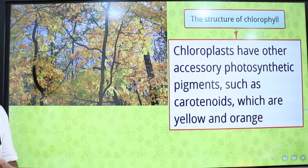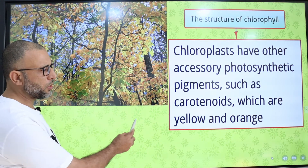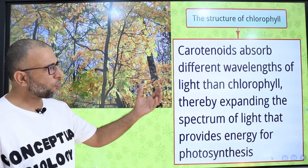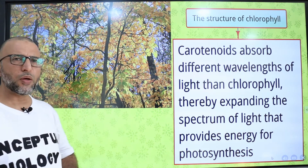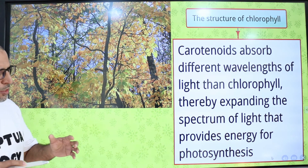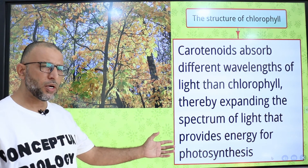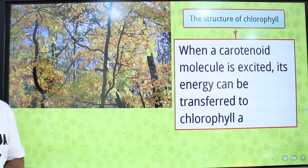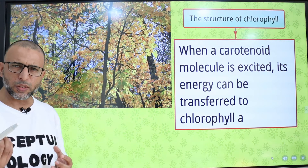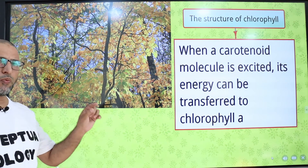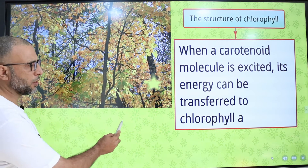Chloroplasts have accessory photosynthetic pigments such as carotenoids, which are yellow and orange. Carotenoids absorb different wavelengths of light than chlorophyll, thereby expanding the spectrum of light available for photosynthesis. When a carotenoid molecule is excited, its energy can be transferred to chlorophyll A present in the reaction centre.